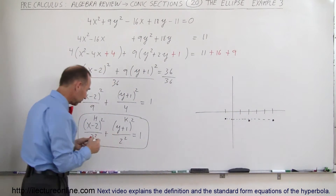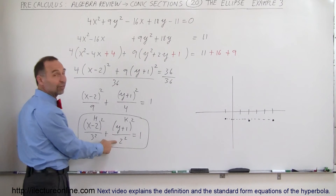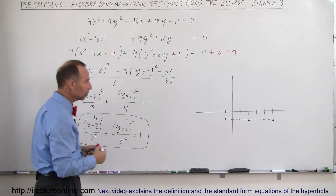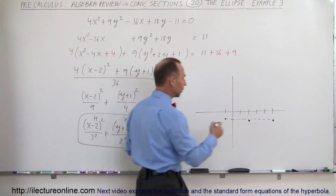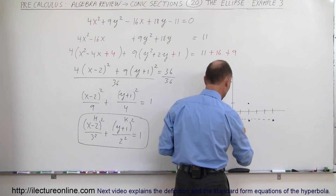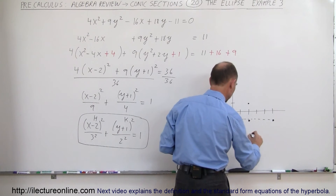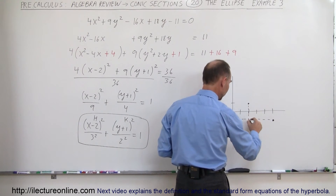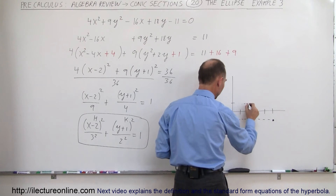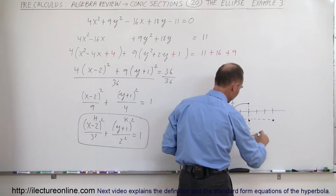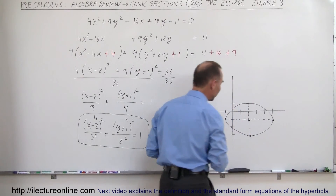The minor axis is vertical. Its half-length is 2, so we go up 2 and down 2 from the center, giving co-vertices at (2, 1) and (2, negative 3). Connecting these four points gives us the ellipse.